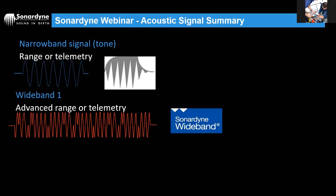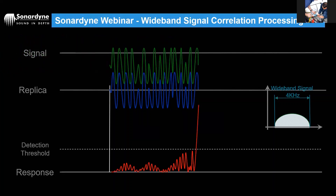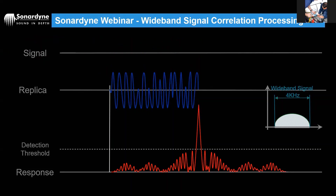With wideband coding, you only get a perfect correlation spike when the ones and zeros of the code match exactly — giving an instantaneous, sharp spike rather than a broad hump. This meant precision improved dramatically. The pulse length could be increased to eight milliseconds, giving more power and longer range while still maintaining much better precision — an order of magnitude improvement in one step. Because the signal is codified, the same frequency can carry multiple different codes, giving over 600 addresses where tone-based systems had only four frequency channels.